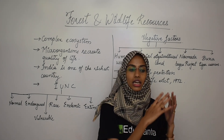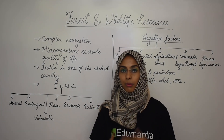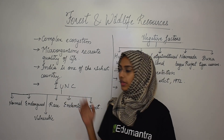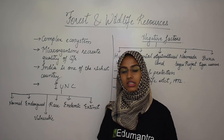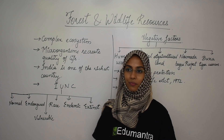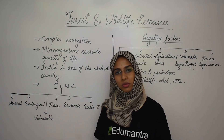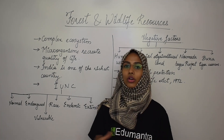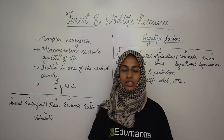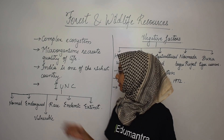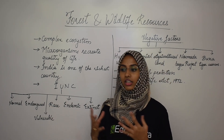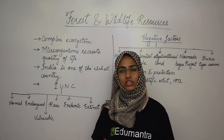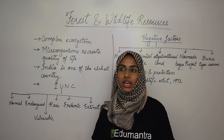Flora and fauna face extinction because of negative factors. The International Union for Conservation of Nature has divided flora and fauna species into six categories. The first one is normal species — this is the species that can be seen very easily. The next one is the endangered species — this is the species whose living existence is very difficult. If the negative factors continue, it can become extinct very quickly, so it is necessary to keep them alive.